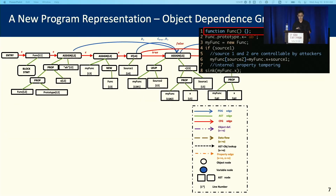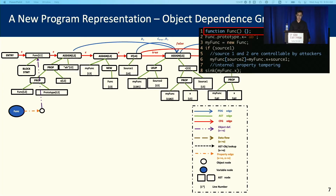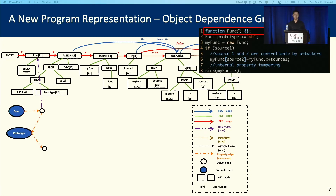Let me talk about how we generate the object dependence graph step by step. In the beginning, we have a new function called func, so we will create an object node together with a variable node and link them together by the property edge. At the same time, we will also create an object-define edge and point from this object node to the AST node. After that, we will also create some other variable nodes and object nodes to represent the prototype chain related to this object.